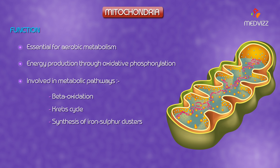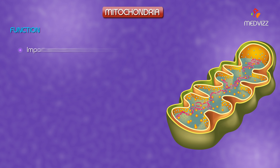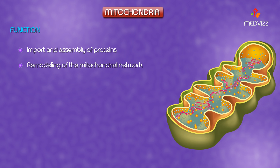In addition, mitochondria maintain, replicate, and transcribe their own DNA and translate mRNA into protein. The import and assembly of proteins is another important mitochondrial function, since most proteins that the mitochondria require are encoded by nuclear DNA and translated in the cytosol. The ongoing remodeling of the mitochondrial network is also a function of the mitochondria.